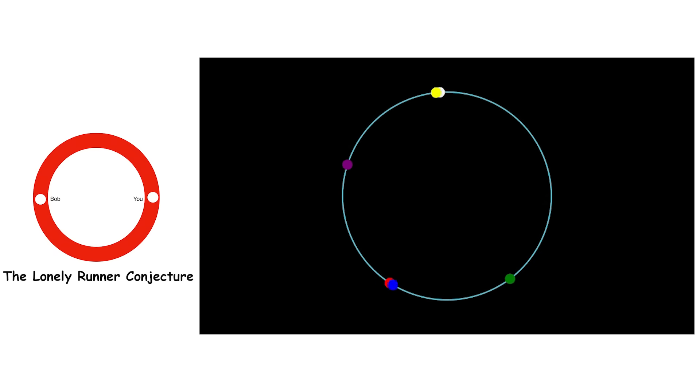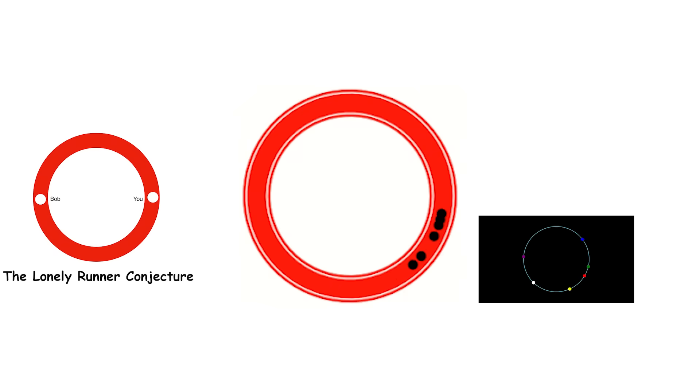This idea is called the Lonely Runner Conjecture. It says that every kid running will become lonely at some point. If there's only one kid running, it's easy because they're always lonely since no one else is there. With two kids, it's also simple. We just watch how fast they run. By pretending one kid is standing still, we can see when the other kid gets lonely.